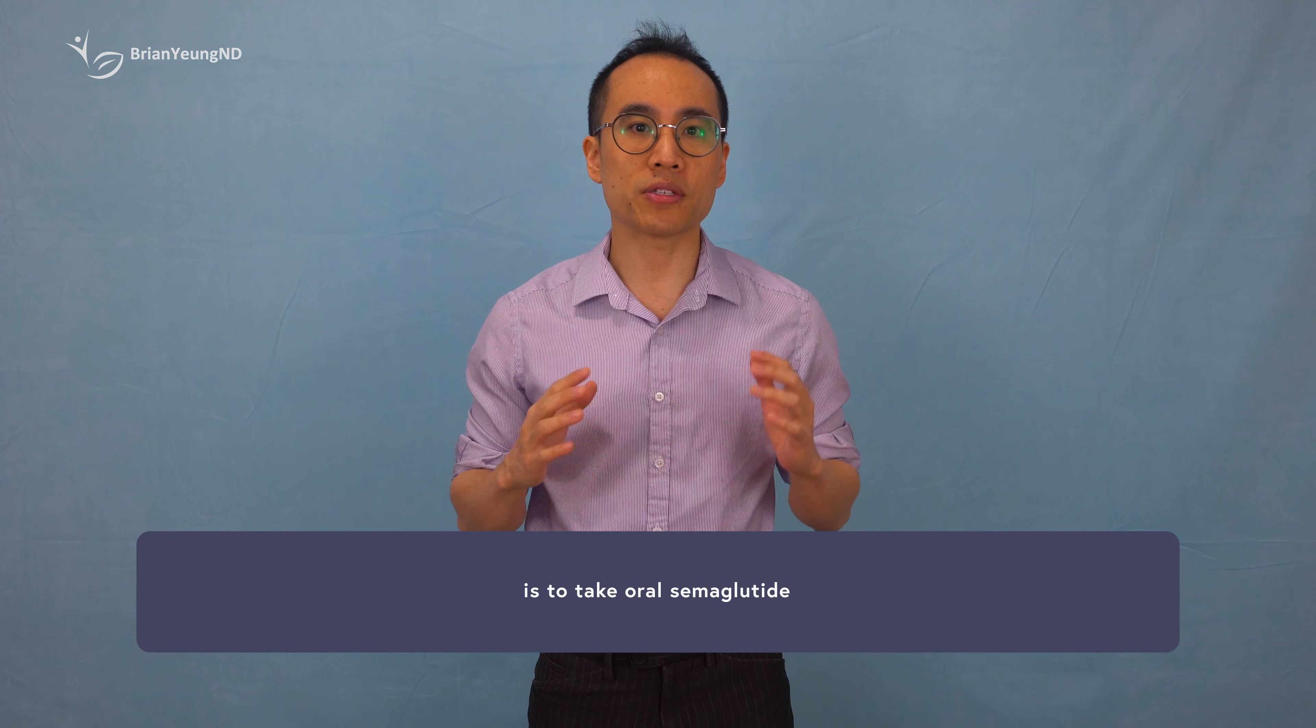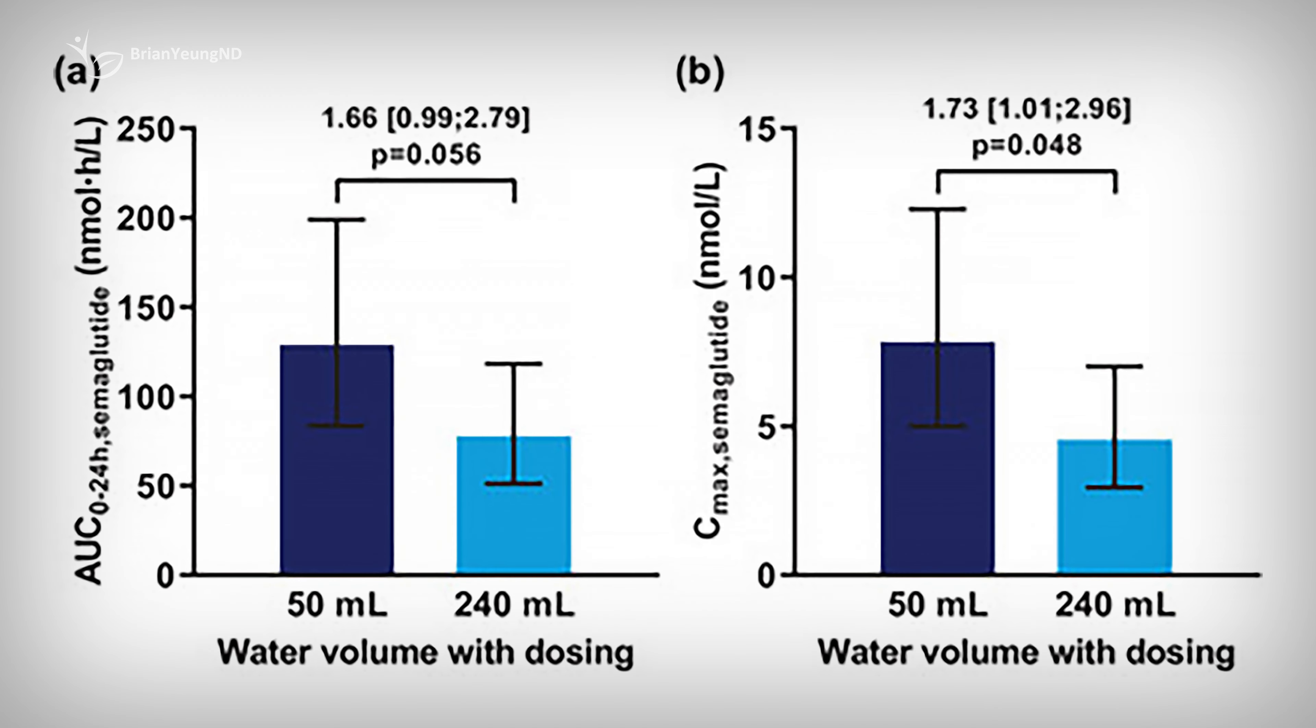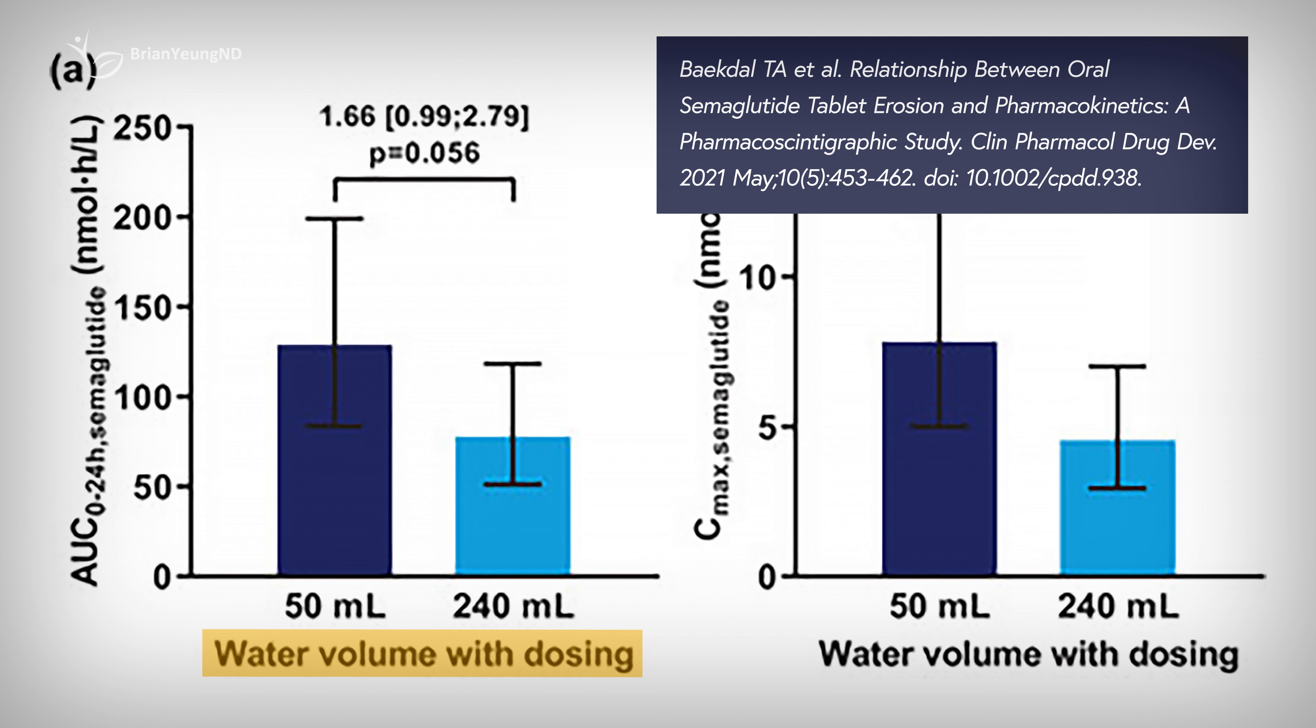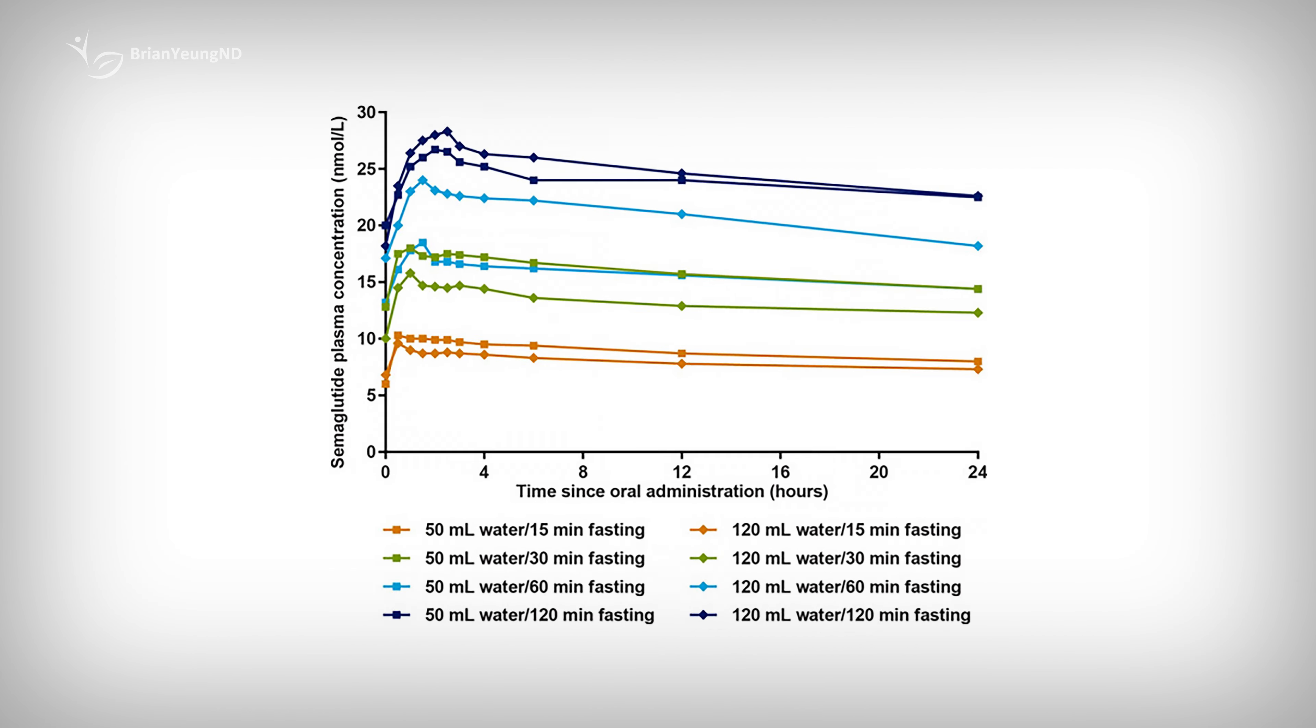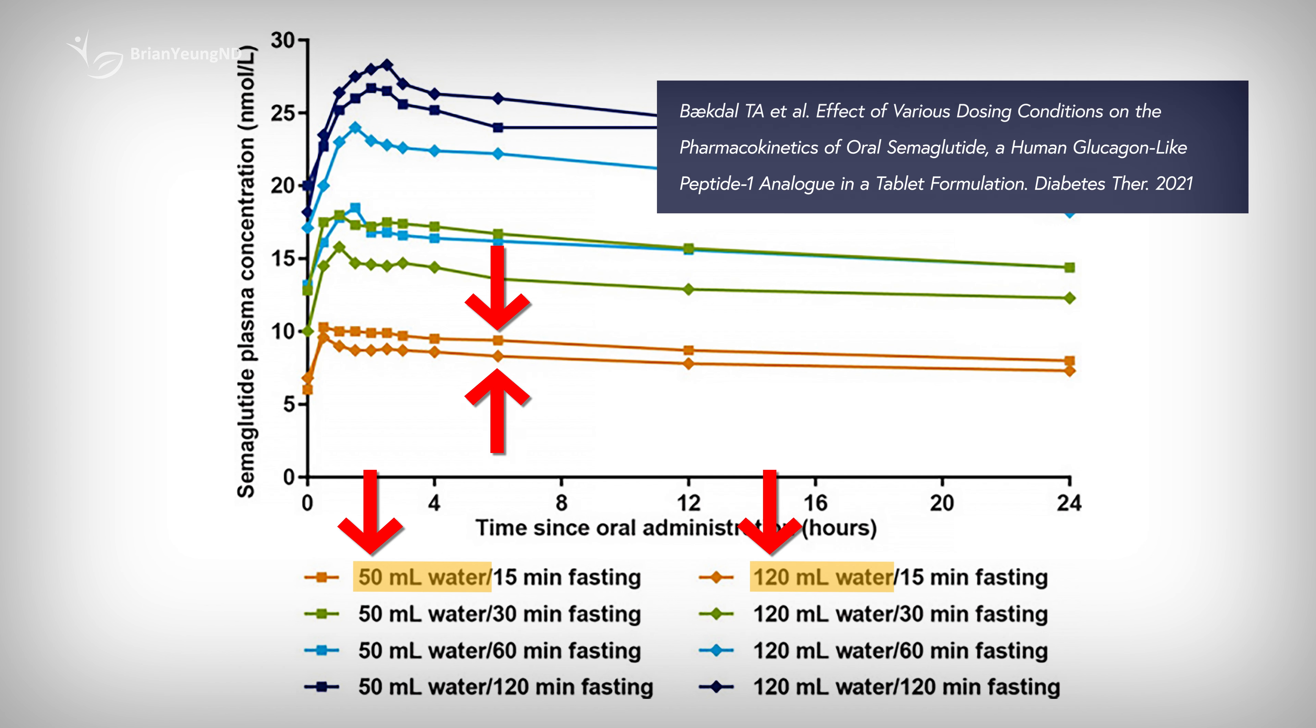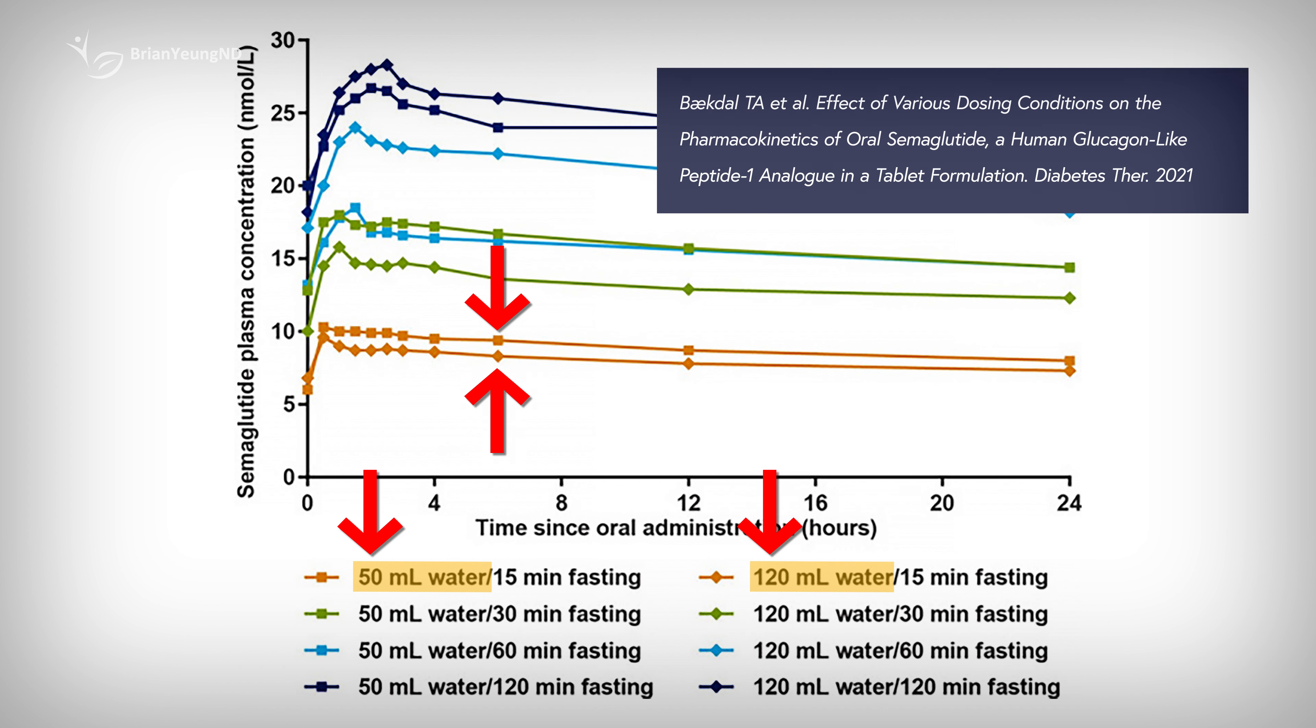The next important step is to take oral semaglutide with no more than half a glass of water. Research has shown that semaglutide is much better absorbed when taken with less water. Studies show that there is about a 40% decrease in absorption when taken with a full glass, that's 240 milliliters of water, compared to a quarter cup, that's 50 milliliters of water. Later studies found that taking it with 50 milliliters of water is about the same as 120 milliliters, which is why the current recommendation is to use it with no more than half a glass of water.